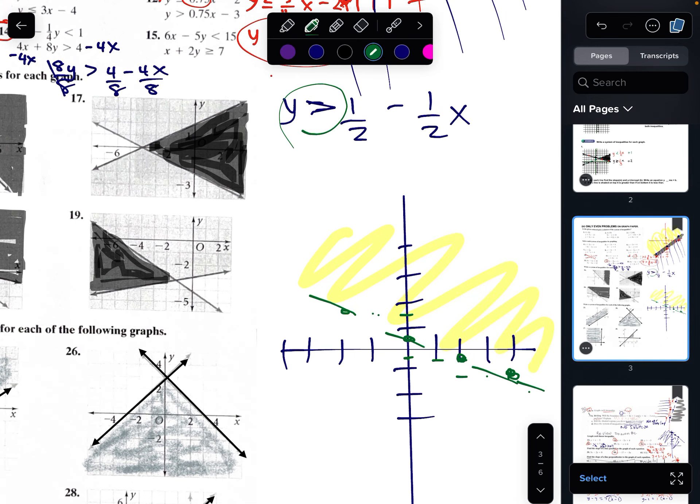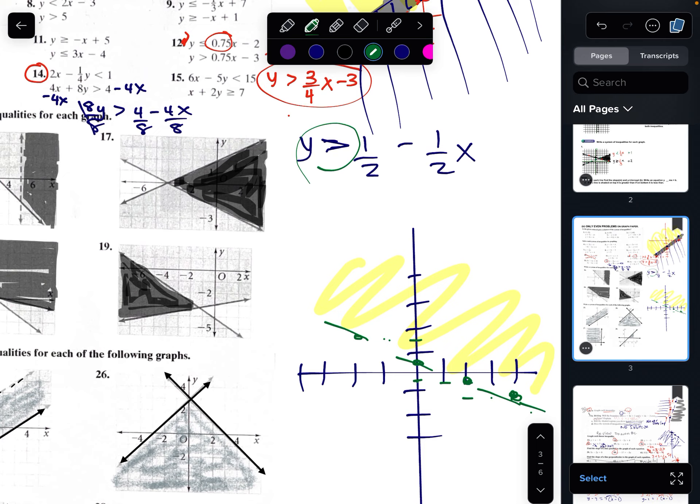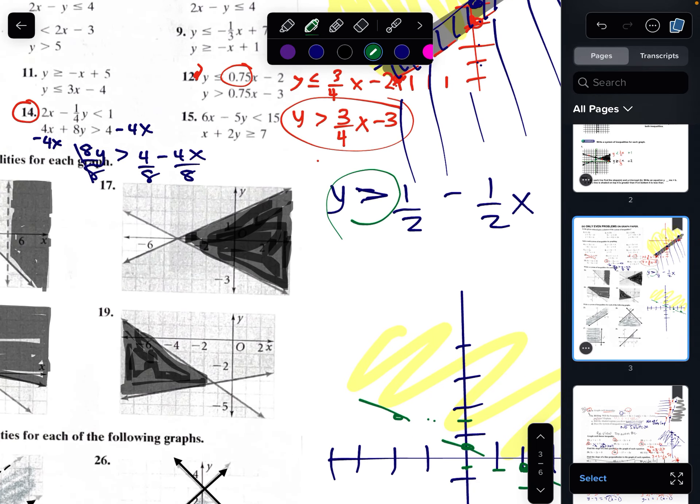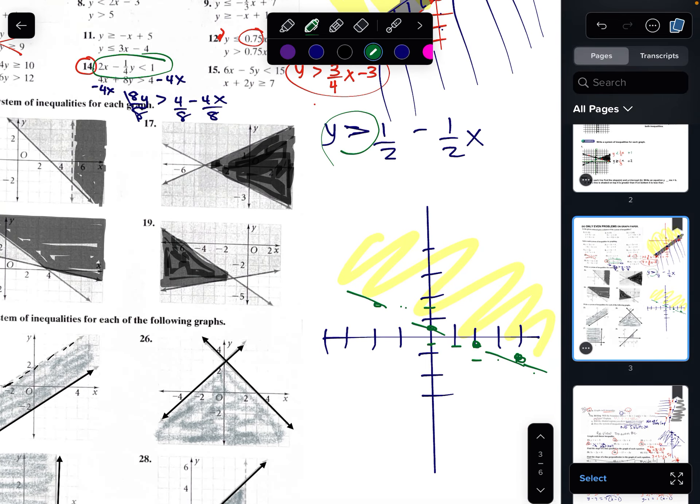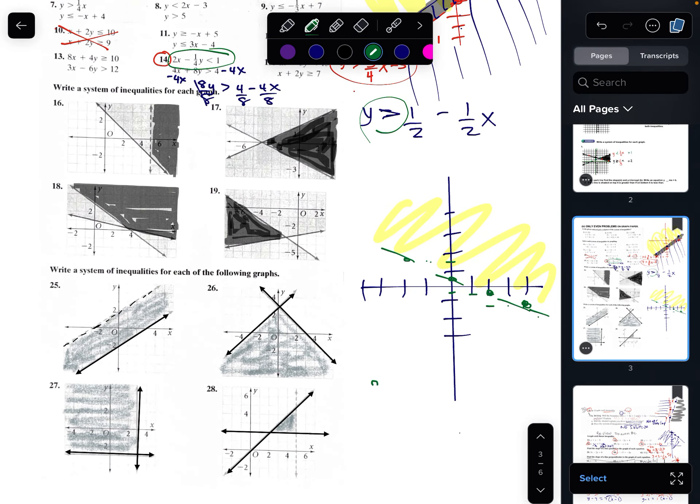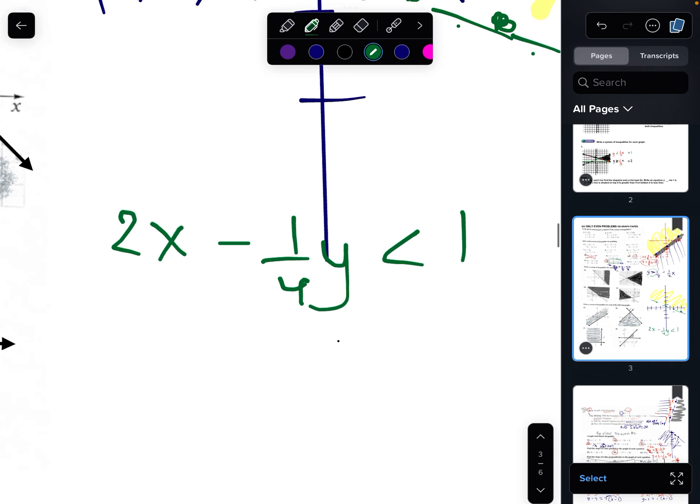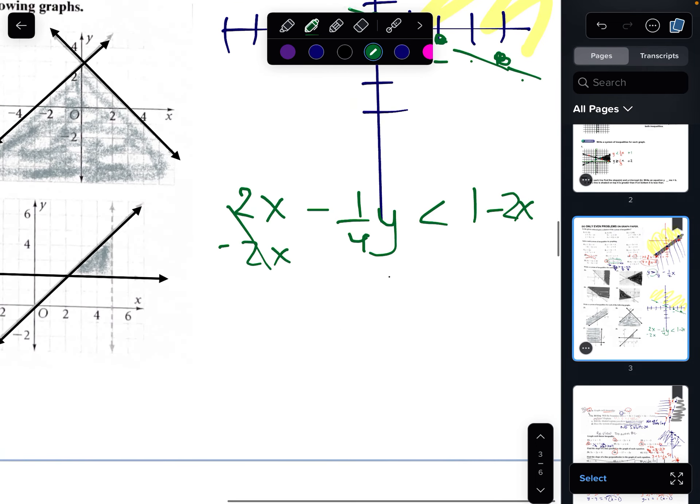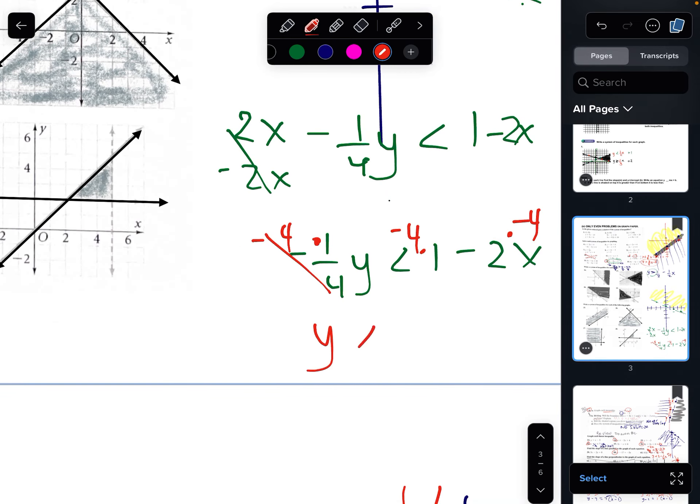And then the other one is here. Solve that. I'll solve this here. Let's see. It is 2x minus 1 fourth y less than 1. Okay. Minus 2x minus 2x. Negative 1 over 4y times a 4. Y is, oh, flip that inequality because you multiply by a negative. This is going to be greater than negative 4, positive 8x.